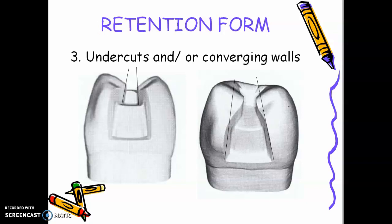Number three, undercuts or converging walls. So how will the filling not be removed? You should have undercut in the buccal and lingual walls. Buccal and lingual walls only for pit and fissure cavities. So in this case, around 10 degrees convergence of your buccal wall and your lingual wall. This also applies to the buccal wall in class 2 and your lingual wall. Sometimes if it's too parallel, you can add undercut. So that is retention form to prevent dislodgement of your restoration.